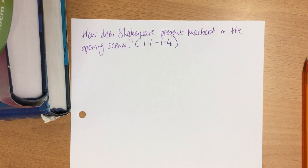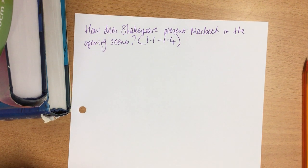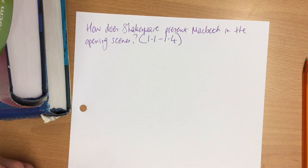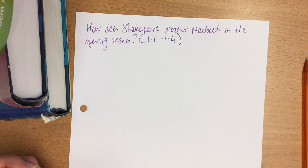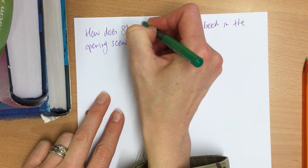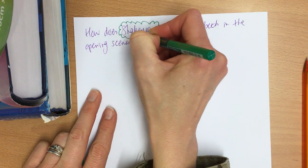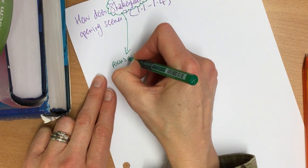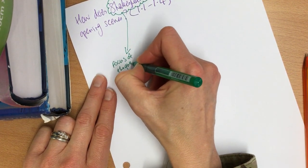So what's the question about? Which word tells us what the question is about? Students suggest 'present,' 'how,' but the teacher confirms the answer is 'Shakespeare.' The question is all about Shakespeare. It's the Shakespeare show — that's the focus of the question.